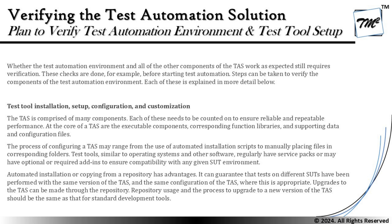Installation, setup, configuration, and customization cover every element of the TAS itself. The TAS is comprised of many components, each of which needs to be counted on to ensure reliable and repeatable performance. At the core of a TAS are the executable components, corresponding functions, libraries, and supporting data and configuration files. These components must be able to communicate, trigger events, and work simultaneously to give the perfect automation solution.